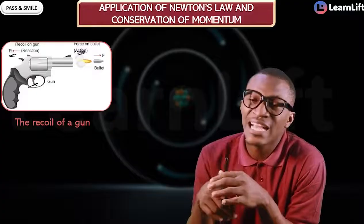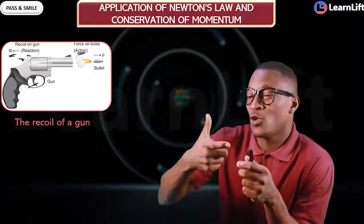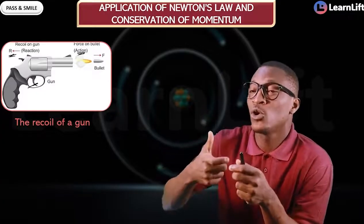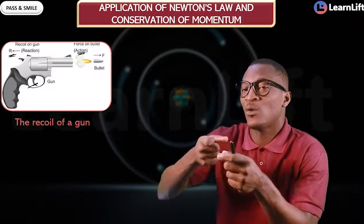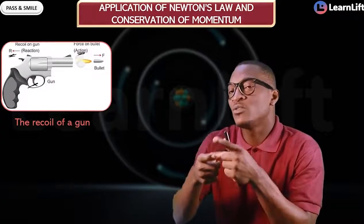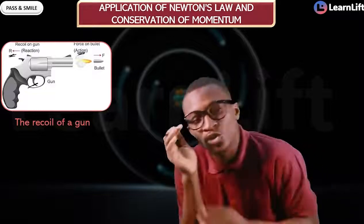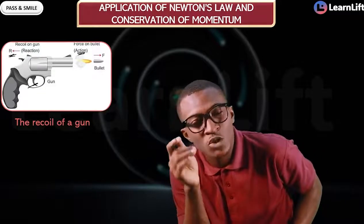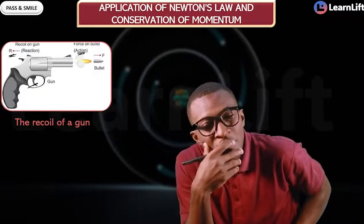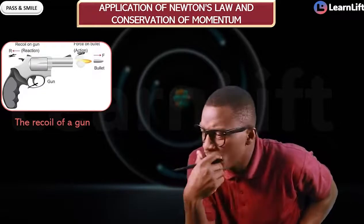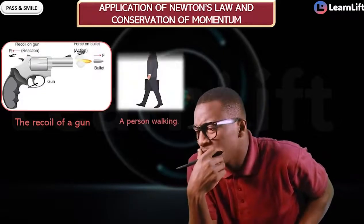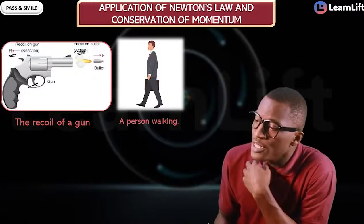That is what we call the recoil of the gun. When you want to shoot the gun, you pull the trigger backward and the bullet goes forward. That is number one — the recoil of the gun.